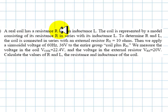A real coil has a resistance R and an inductance L. The coil is represented by a model. The model consists of its resistance R in series with its inductance L.